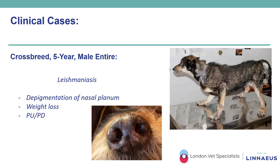A five-year-old entire male crossbreed imported from southern Italy developed progressive depigmentation of the nasal planum, followed by systemic signs such as weight loss, polyuria, polydipsia and peripheral lymphadenopathy. The history and clinical signs made cutaneous leishmaniosis a possible differential diagnosis, and this was further confirmed by laboratory findings. The disease is caused by the protozoan Leishmania infantum, and dogs imported from endemic areas might develop the condition months or years later. It is transmitted to humans and animals by blood-sucking sandflies of the genus Phlebotomus, typical in the old world of southern European countries.